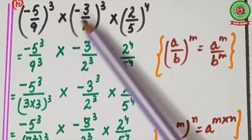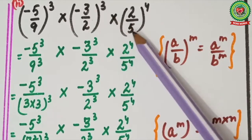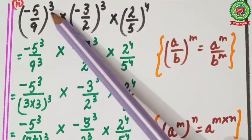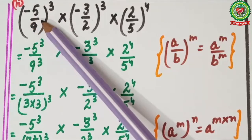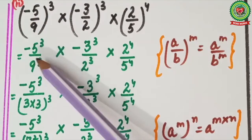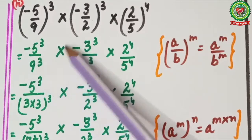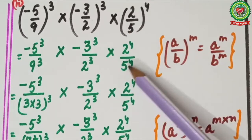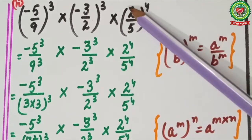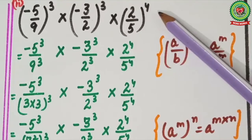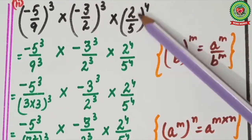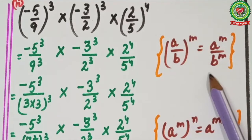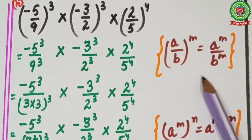Now the second example: (−5/9) raised to power 3, multiplied by (−3/2) raised to power 3, multiplied by (2/5) raised to power 4. Applying the rule a upon b raised to power m: −5 raised to power 3 upon 9 raised to power 3, multiplied by −3 raised to power 3 upon 2 raised to power 3, multiplied by 2 raised to power 4 upon 5 raised to power 4.